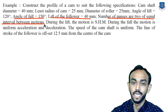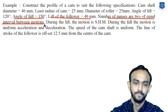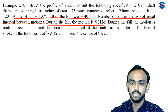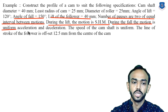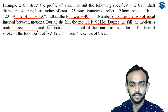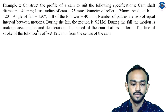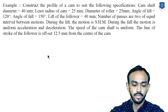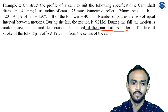The number of dwells are two at equal intervals, so the remaining angle is divided into two equal parts — theta-2 and theta-4. During the lift, the motion is simple harmonic motion, and during the fall the motion is uniform acceleration. The cam shaft speed is uniform.